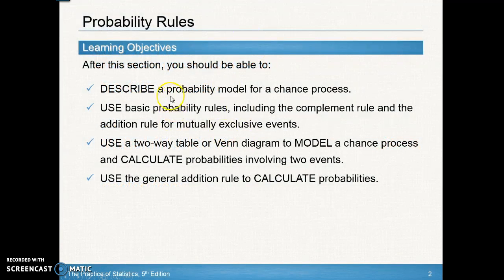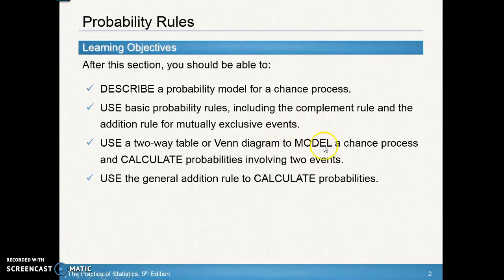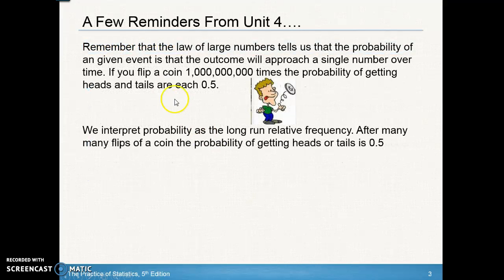In this section we're going to: describe a probability model — that's a vocab word you'll have to understand; use basic probability rules, which you may have already seen in Algebra 2; understand how to use a two-way table and a Venn diagram to model a chance process; and use the general addition rule to calculate probabilities.